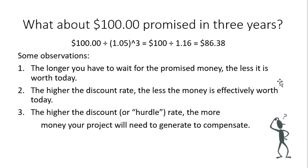Some things to think about: the longer you have to wait for the promised money, the less it's really worth today. Also, the higher the discount rate, the less the money is effectively worth today. So if the rate was 10% instead of 5%, raised to the third power, you would see a smaller number. The higher the hurdle rate, the more money your project will need to generate to compensate. If the interest rate is really low, the effective present value is higher; if the interest rate is effectively higher, the money in your pocket today is lower.